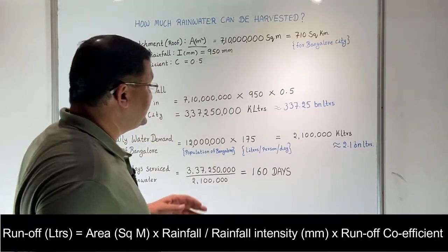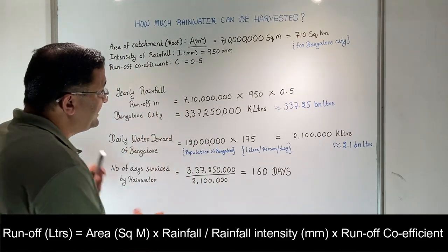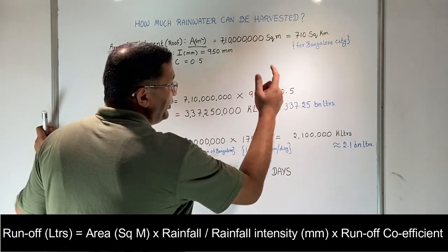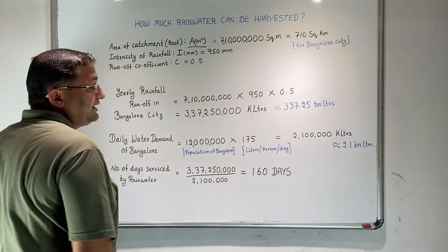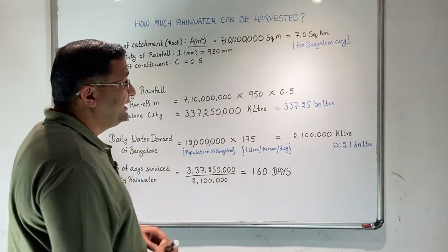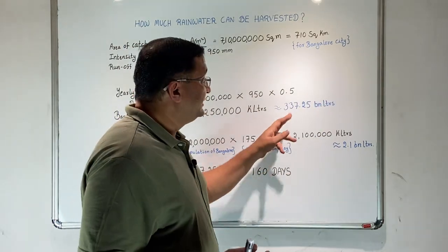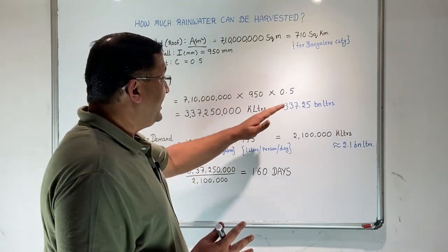Using the same equation, yearly rainfall runoff from Bangalore city is 710 times 950 mm times 0.5. This gives us yearly runoff from Bangalore equal to 337.25 billion liters. This is the amount of water which runs off from the city every year.